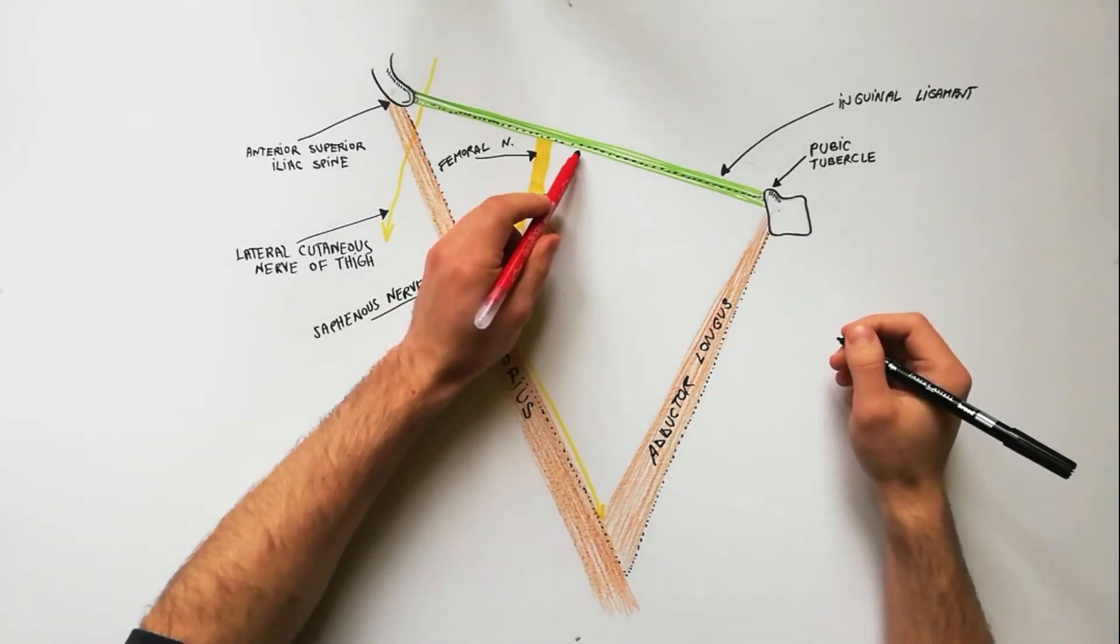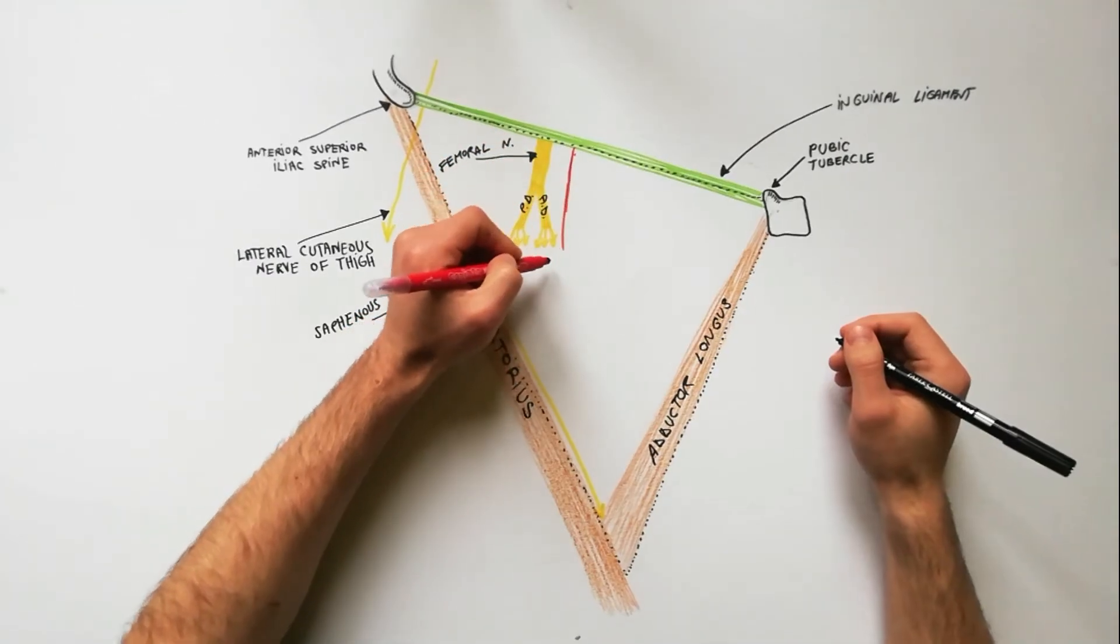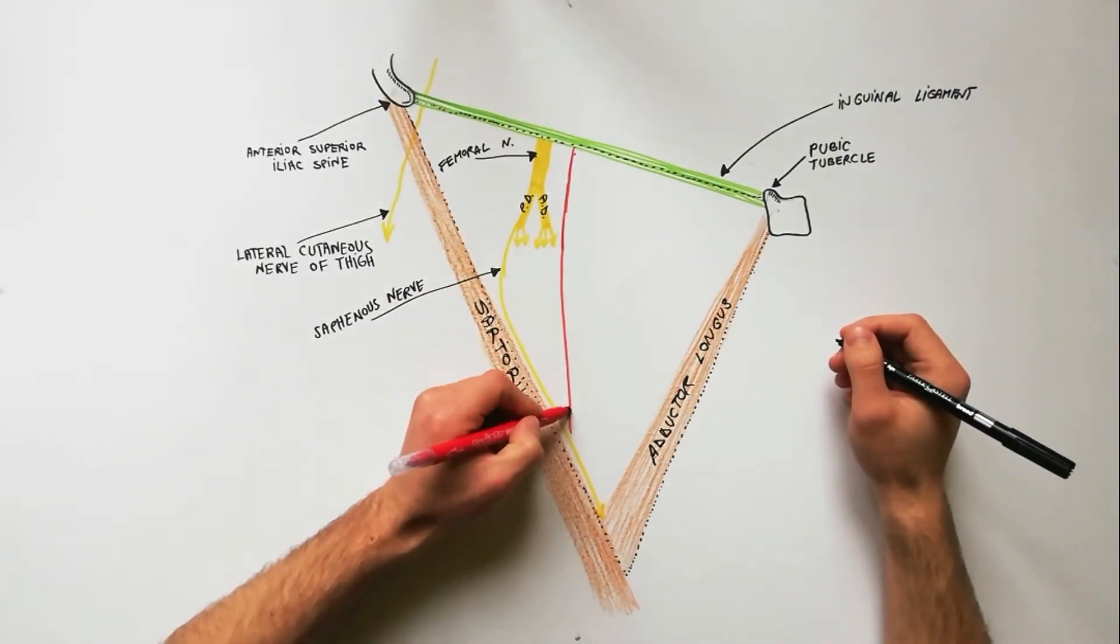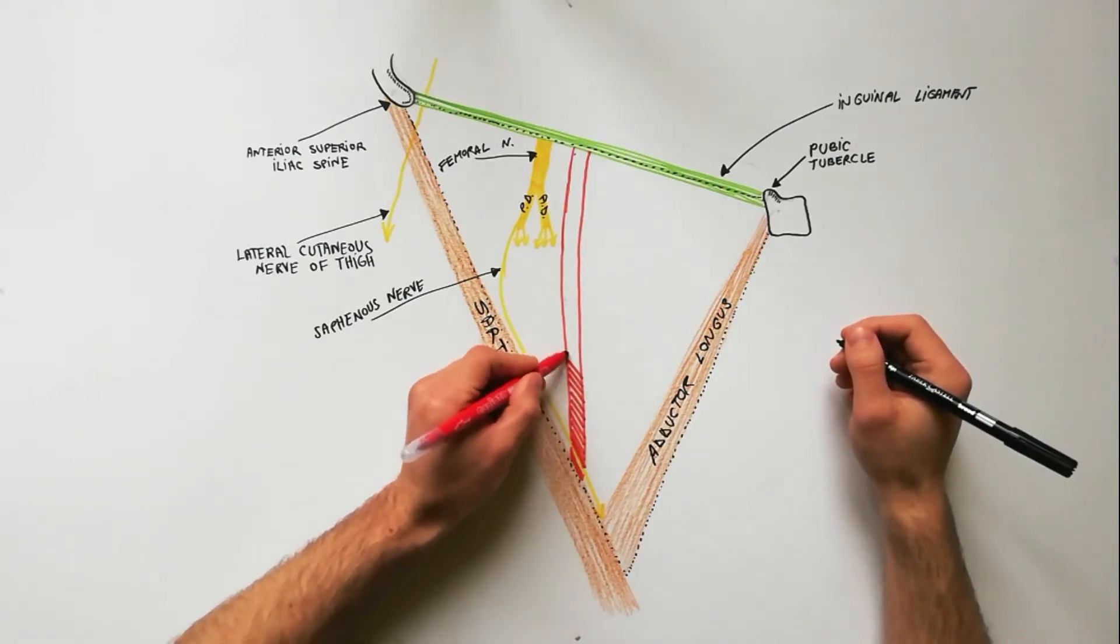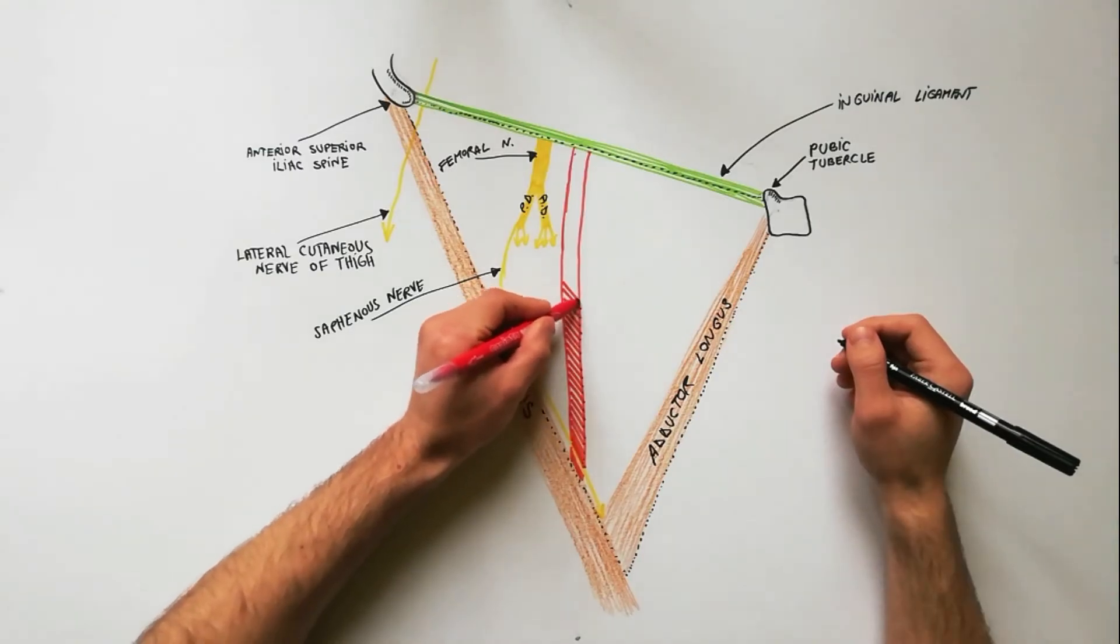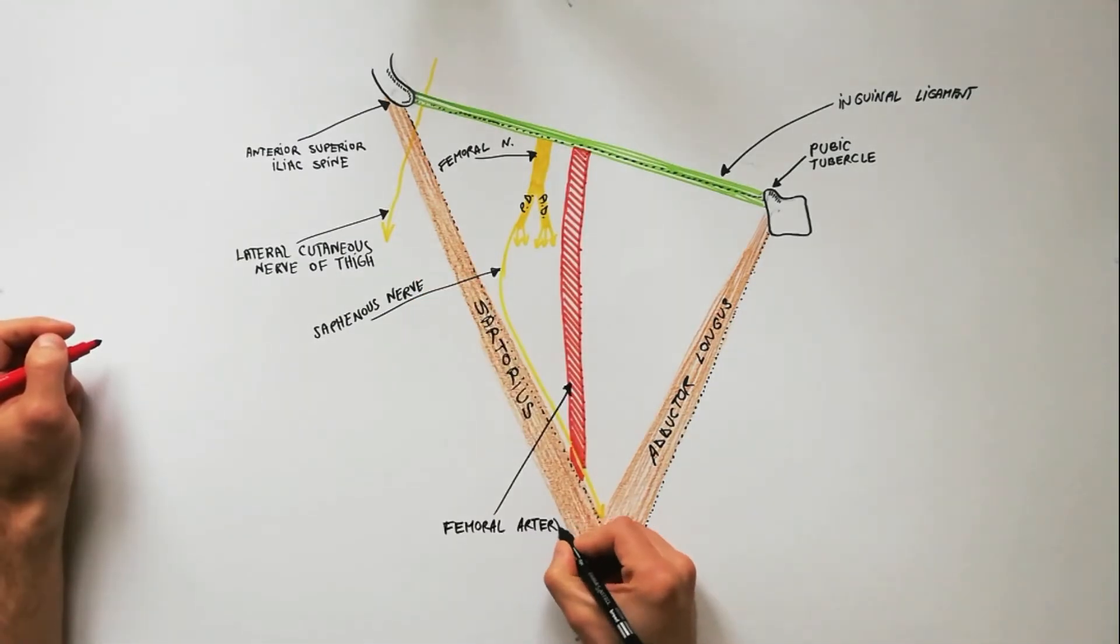The femoral artery emerges from the base of the femoral triangle at the midpoint between the anterior superior iliac spine and the pubic symphysis of the pelvic bone, and exits through the apex of the triangle into the adductor canal.